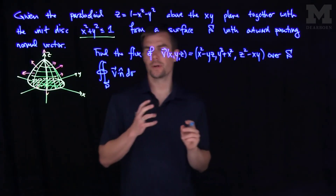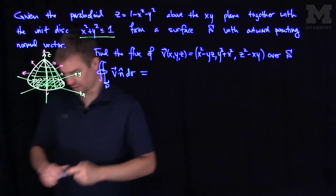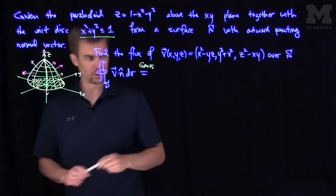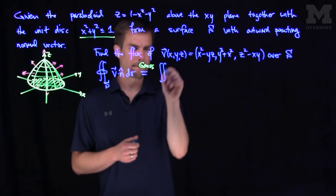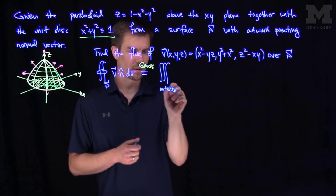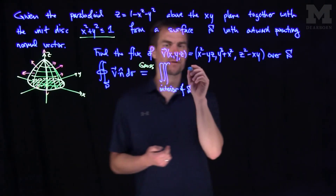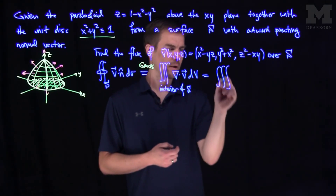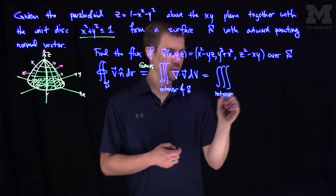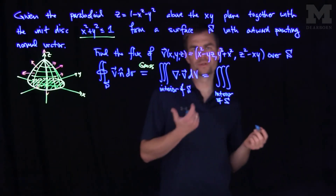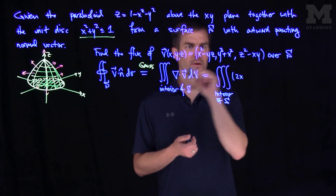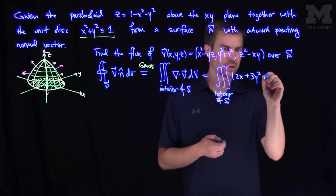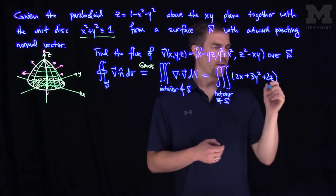To do this, we're going to use the Gauss Divergence Theorem. By the Gauss Divergence Theorem, this equals the triple integral over the interior of the surface S of the divergence of this vector field dV. The divergence of this vector field is going to be 2x plus 3y squared plus 2z, and then we have a dV.